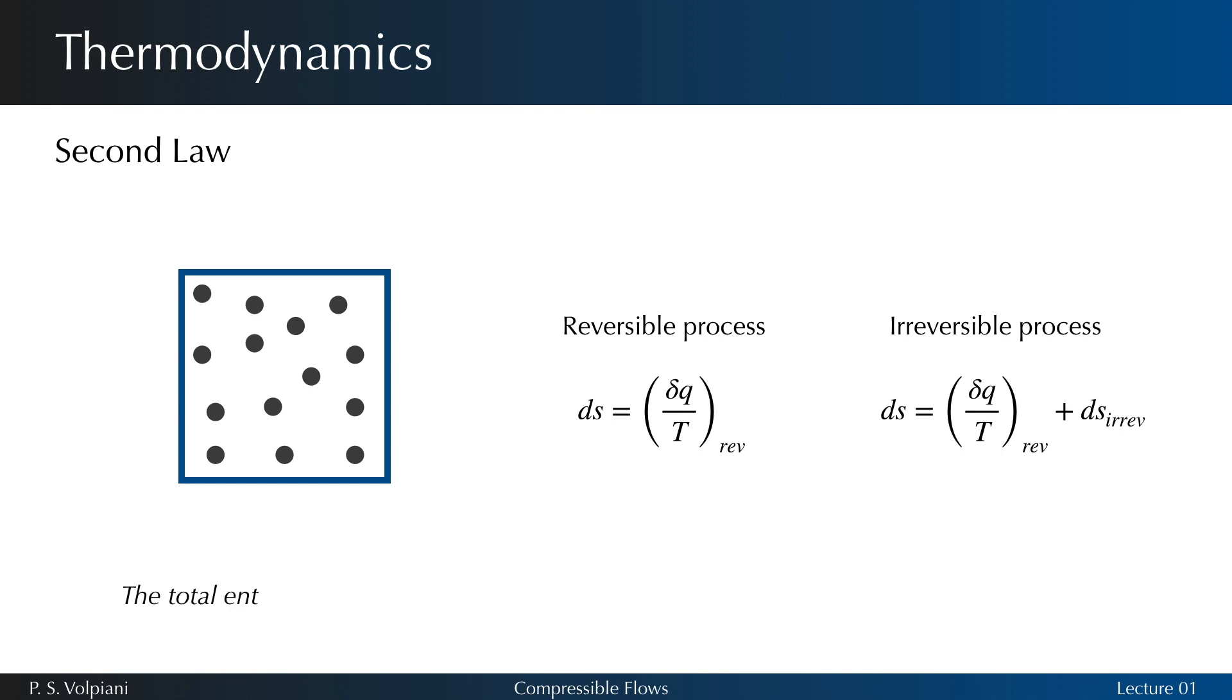Then, for any adiabatic process occurring without heat exchange, dS is greater than zero. And for any reversible adiabatic process, dS equals zero. Such process is called isentropic, since it is done with constant entropy.